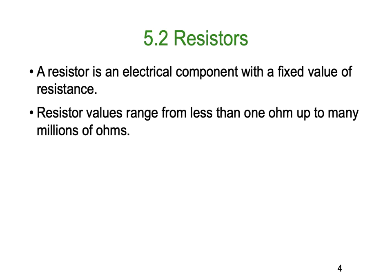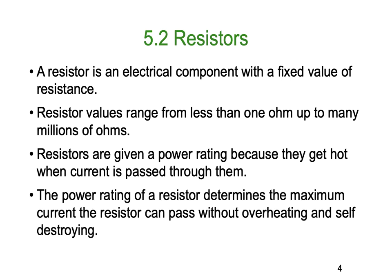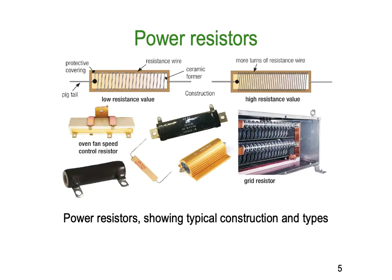A resistor is an electrical component with a fixed value of resistance. Resistor values range from less than one ohm right up to many millions of ohms — fractions of an ohm up to well over mega ohms. Resistors are given a power rating because they get hot when current is passed through them. Whenever selecting a resistor you want to know its resistance value and how many watts of energy it can handle, because if you exceed that it will destroy itself. The power rating determines the maximum current the resistor can pass without overheating and self-destructing.